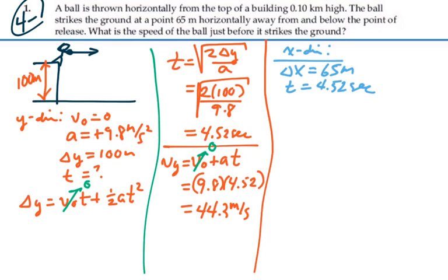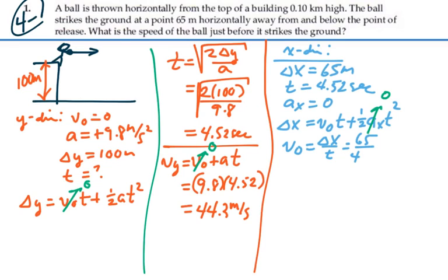So, we have no acceleration in the x direction. And if we use our same formula, then delta x is equal to initial velocity times time plus one-half acceleration times time squared. But in this case, the acceleration is zero. And hence, our initial velocity is going to equal our displacement divided by our time, 65 divided by 4.52, is equal to 14.4 meters per second.